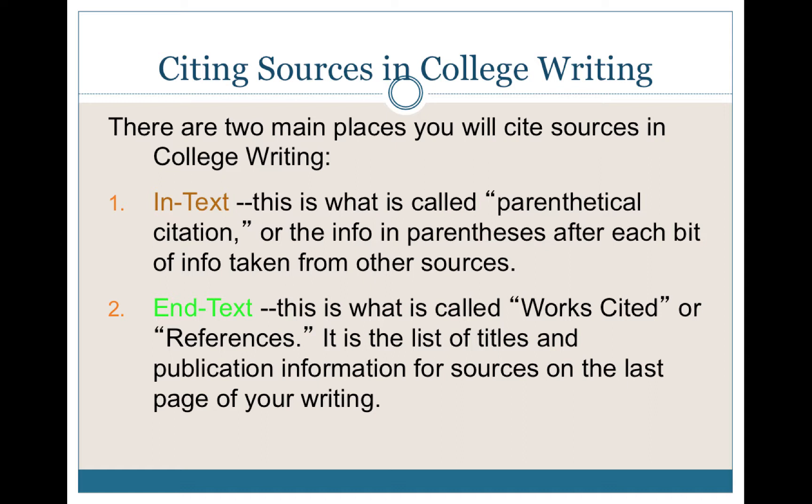Paired up with that are end-text citations. In MLA, we call these works cited. In APA, they're called references. They're called other things in other places. This is a list of titles and publication information for the sources, included at the very end of your paper and not included in your total word count, fortunately or unfortunately, depending on what you think of that.